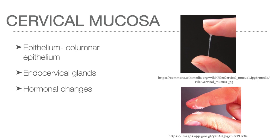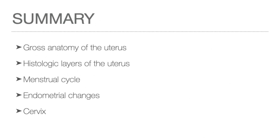In summary, the gross anatomy of the uterus including its parts and blood supply was described, followed by the histologic appearance of the different layers of the uterine wall with emphasis on the endometrium and its response to changing hormonal levels during the menstrual cycle. Basic concepts of the menstrual cycle were explained and correlated with ovarian and uterine changes. Lastly, the histology of the cervix was discussed, including the clinical significance of the transformation zone and cervical discharge.